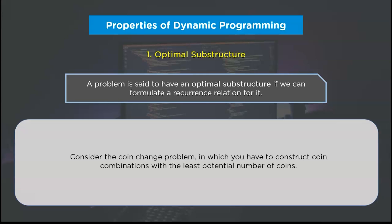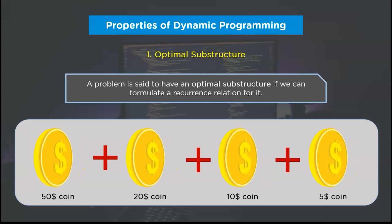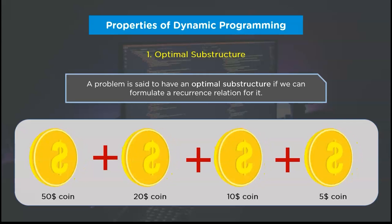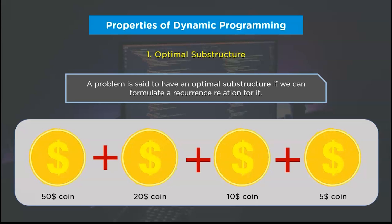Let's say we have a limitless supply of $50, $20, $10, and $5 coins, and the amount for which we need the least possible number of coins is $85. To formulate the solution, we'll have to traverse through all possible permutations of coins. The most logical solution is to add the coin of largest value at each iteration that does not take us past the expected amount of $85. This means we break the problem into several iterations by choosing the highest-value coin each time — this conversion of a larger problem into smaller sub-problems is known as optimal substructure.